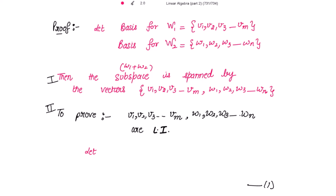So let's take all the scalars. For v1, v2, v3 I will take alpha1, alpha2, and so on. For w1, w2 I'm taking beta1, beta2. So we write the linear combination: alpha1*v1 plus ... plus alpha_m*vm plus beta1*w1 plus beta2*w2 ... plus beta_n*wn, and this is equal to 0.